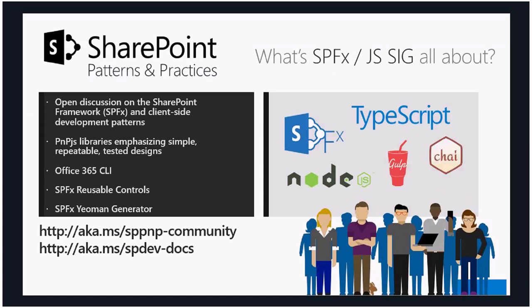We encourage you to attend both calls, but they give you a little bit more focus on different topic areas. In this one, we do an open discussion and updates around the latest with SharePoint Framework — what's new, what's on the roadmap. We then go over updates around the PNP.js components, the Office CLI, the reusable controls, and the community-supported Yeoman Generator, which is the newest addition to our PNP-produced SharePoint Framework-related resources. And we do demos on this call, which I think are always one of the best parts.